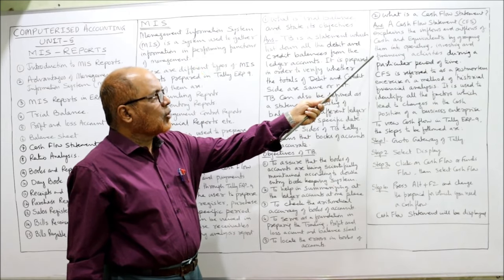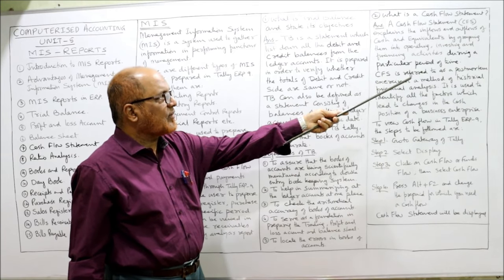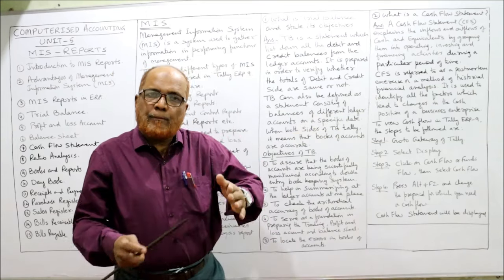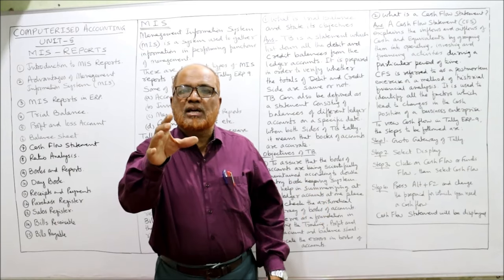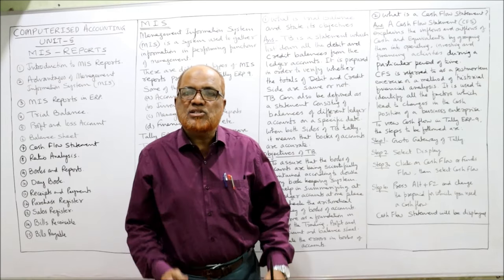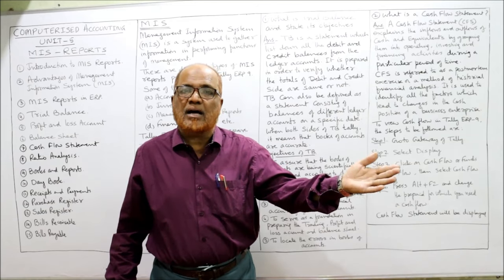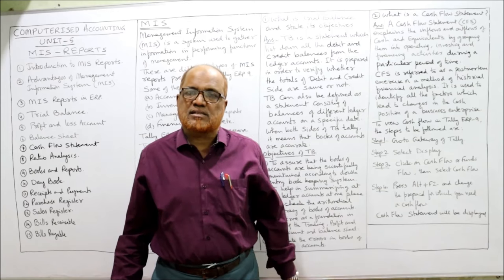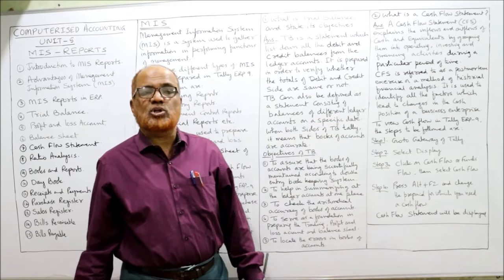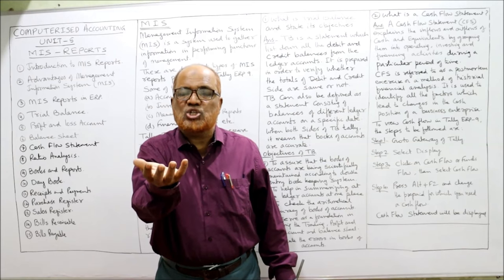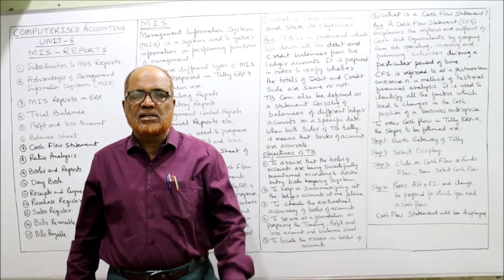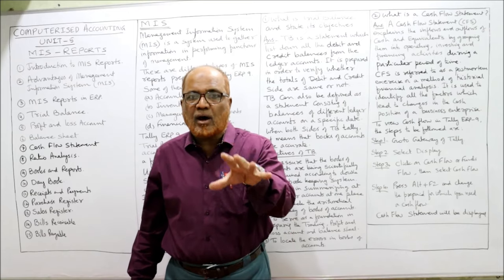The cash flow statement is referred to as a post-mortem exercise or a method of historical financial analysis, meaning it analyzes what cash inflows and outflows occurred in a past period. It is used to identify all factors that lead to changes in the cash position of the business — if cash increased, how it increased; if cash decreased, why it decreased. To find out these factors, we prepare the cash flow statement.